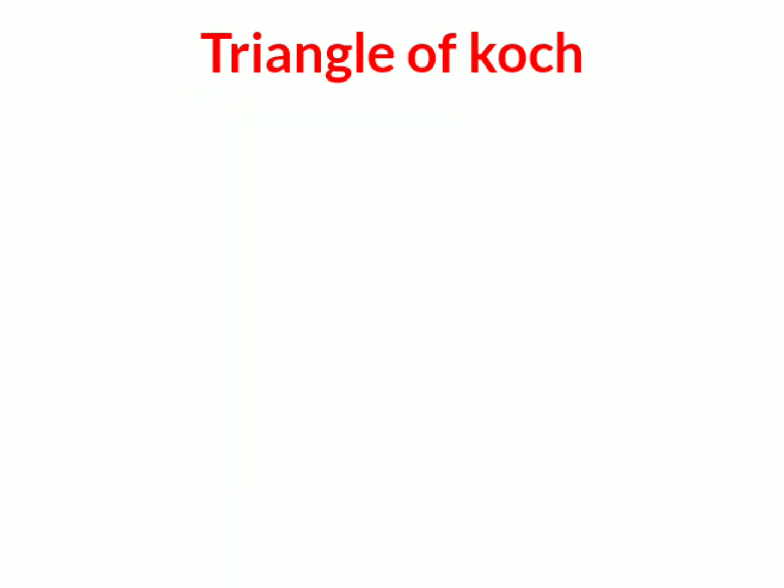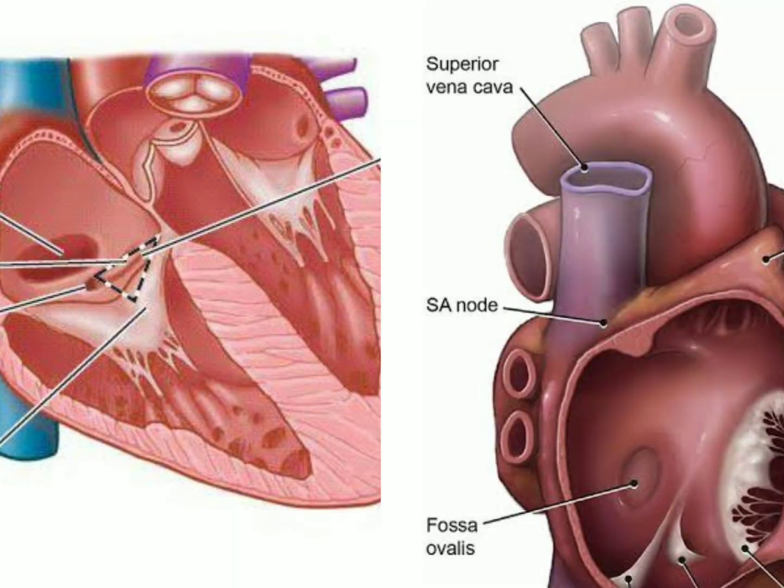After discussing the structure of the right atrium, we now know the positions of the SA node and the AV node. The SA node is present in the upper part of the sulcus terminalis, and the AV node is present in the triangle of Koch.